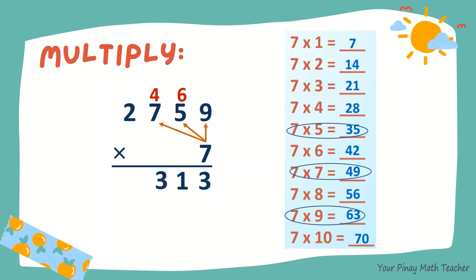49 plus 4, 53. And 7 times 2 is 14. Plus 5, 19. So the product is 19,313.